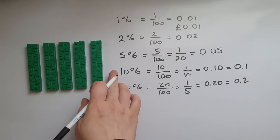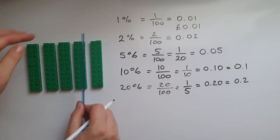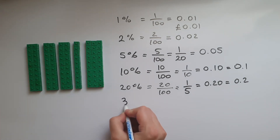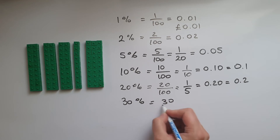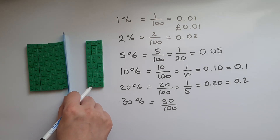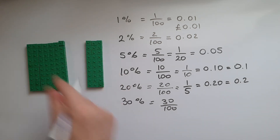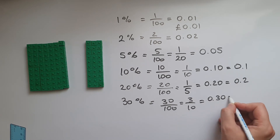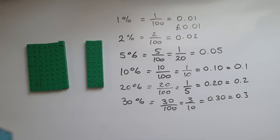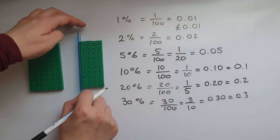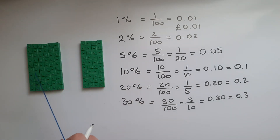30 percent is going to be three times the 10 percent, so it's 30 out of 100, and it's also 3 out of 10 — three columns out of 10 — and that is 0.3 or 0.30 as a decimal. 40 percent, as you can see, is 4 out of 10 and you can write it as 0.4 as a decimal.